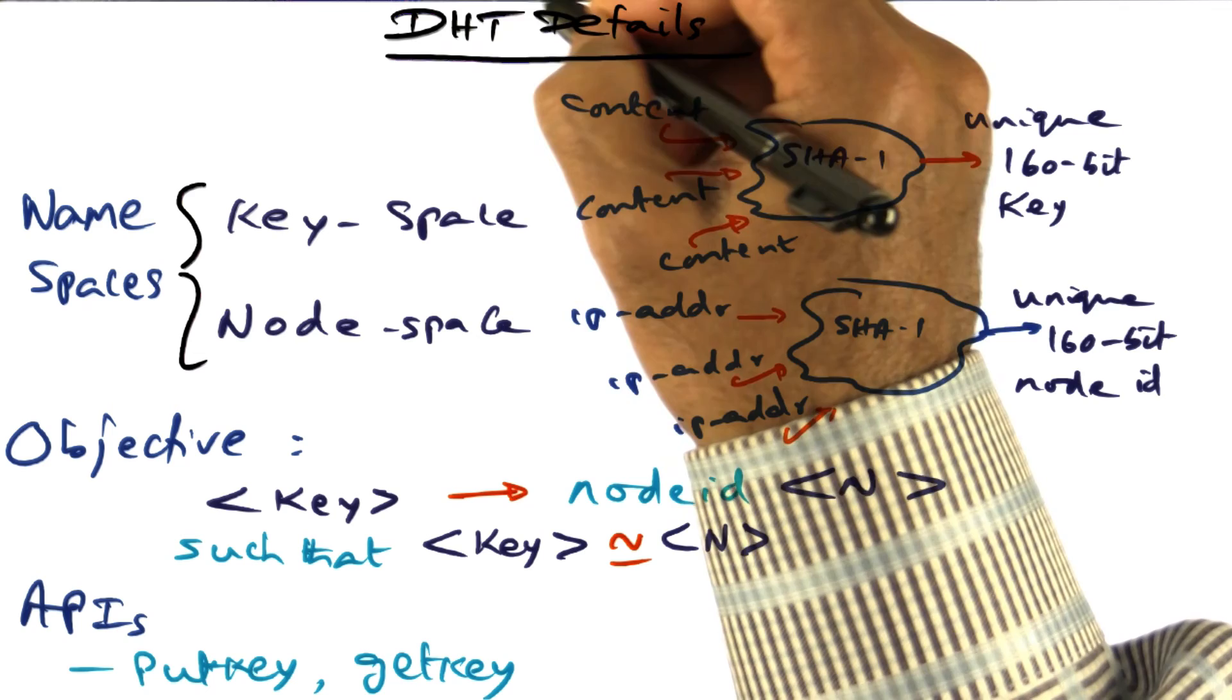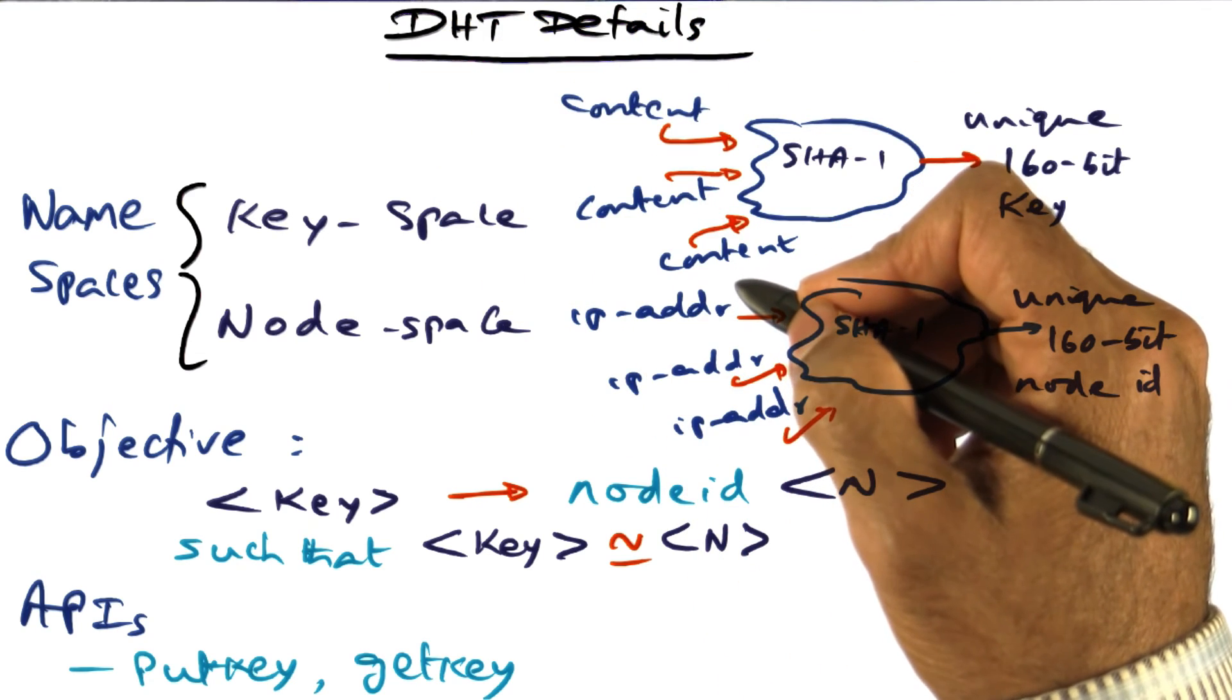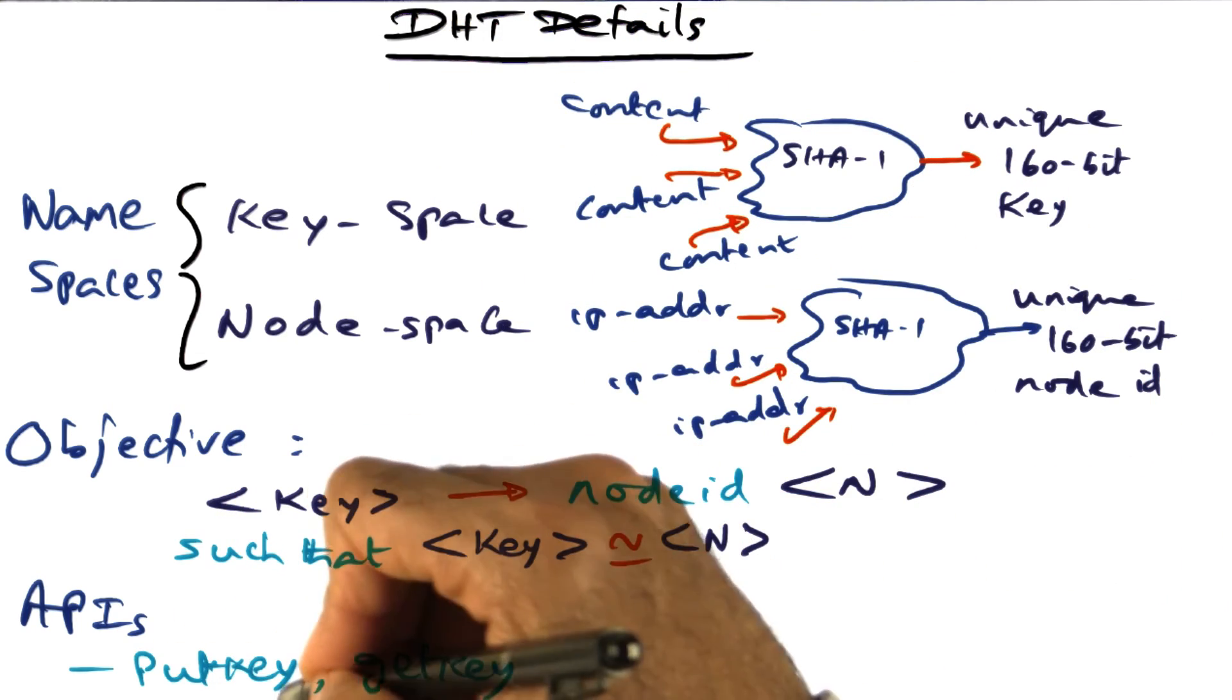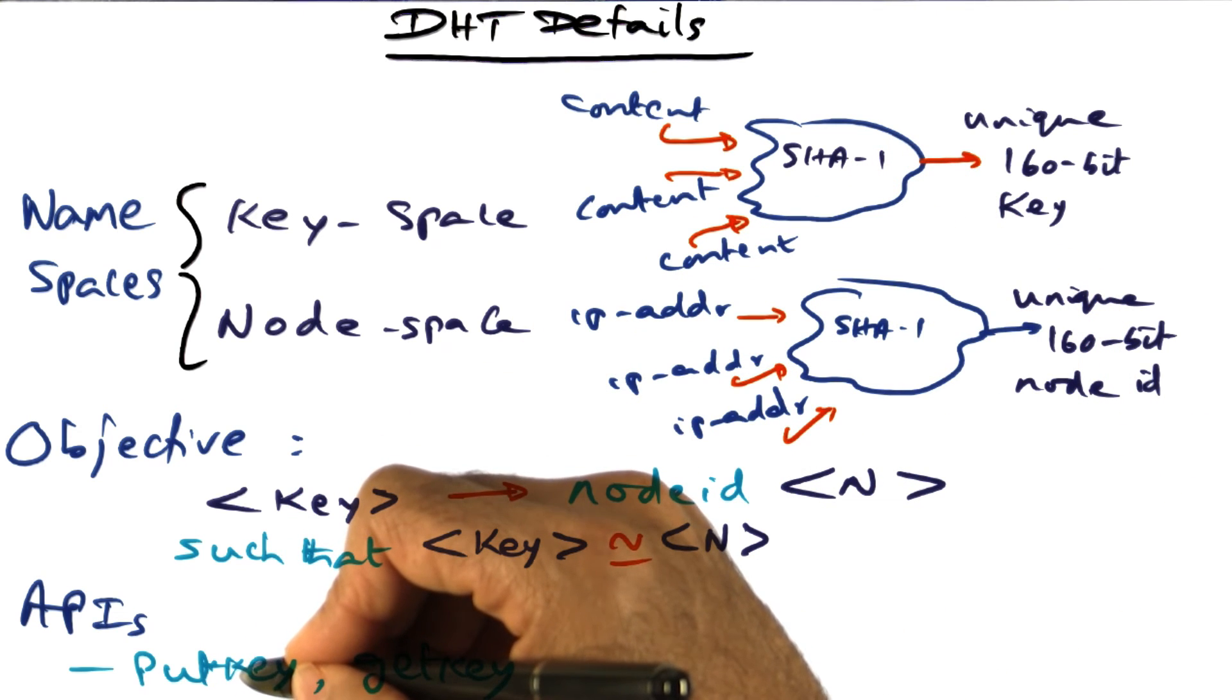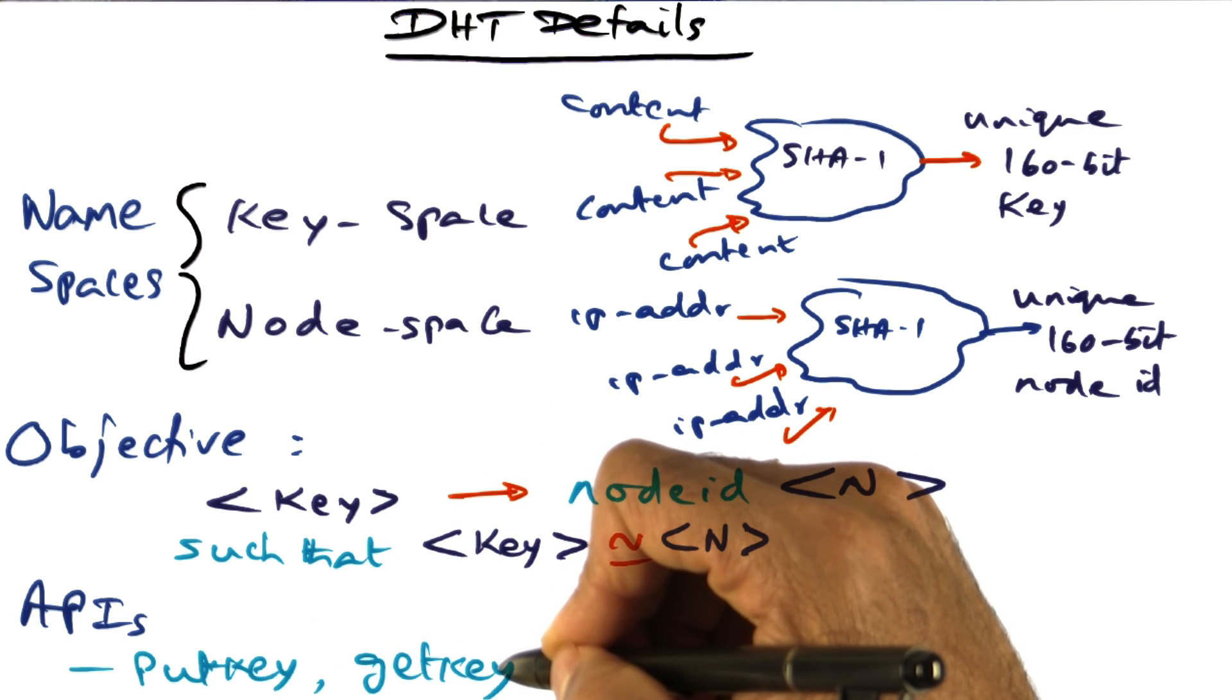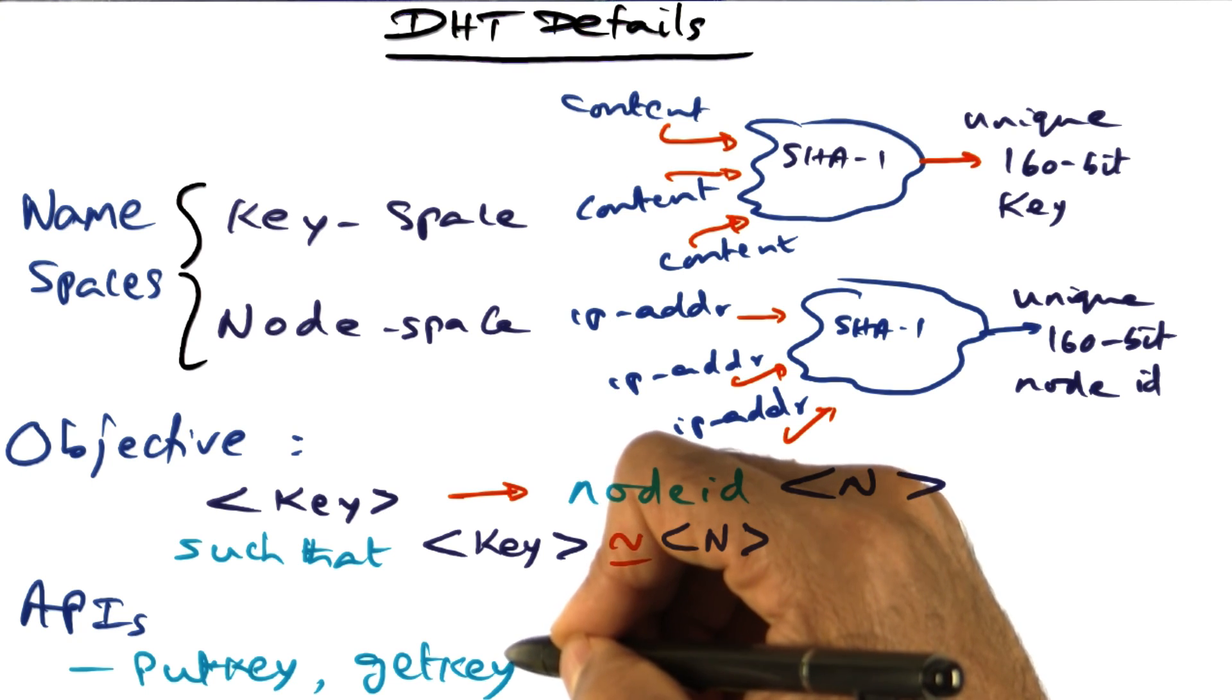So the API for manipulating this distributed hash table data structure would be put key and get key. Put key will take two arguments, the key and the value. Value can be anything that you want to associate with that. In the previous example, I said the value may be the IP address of the content that is associated with that particular key. And get key takes one argument, namely the key, and returns the value that is associated with that key value pair.